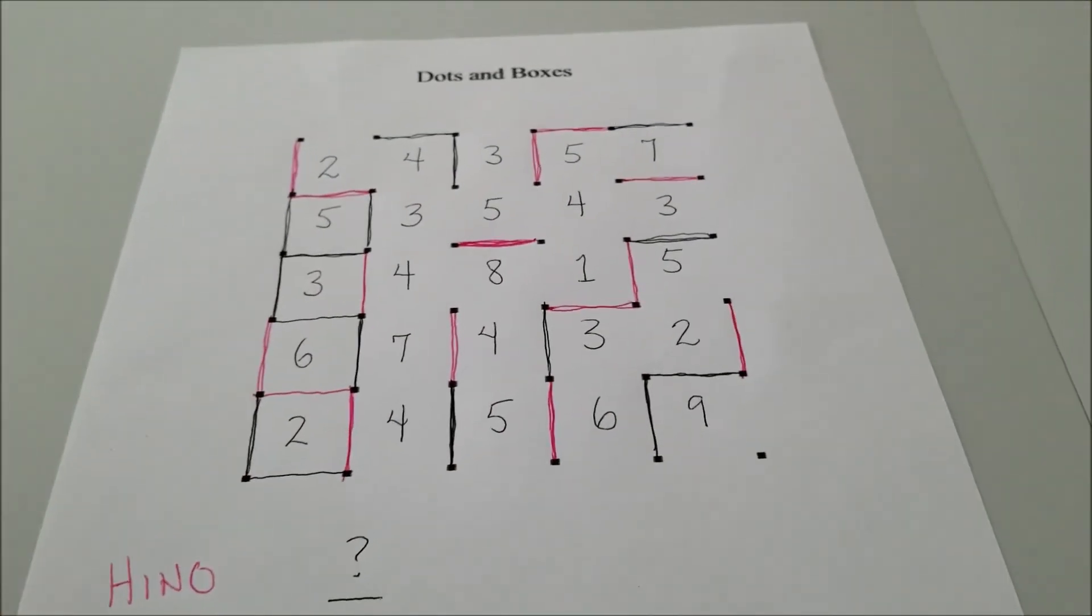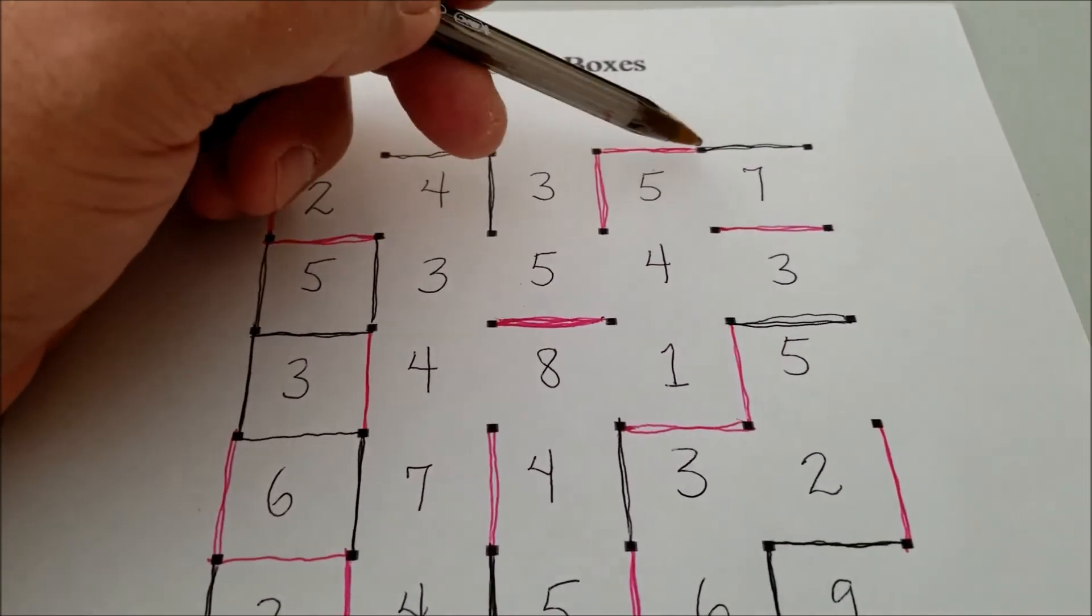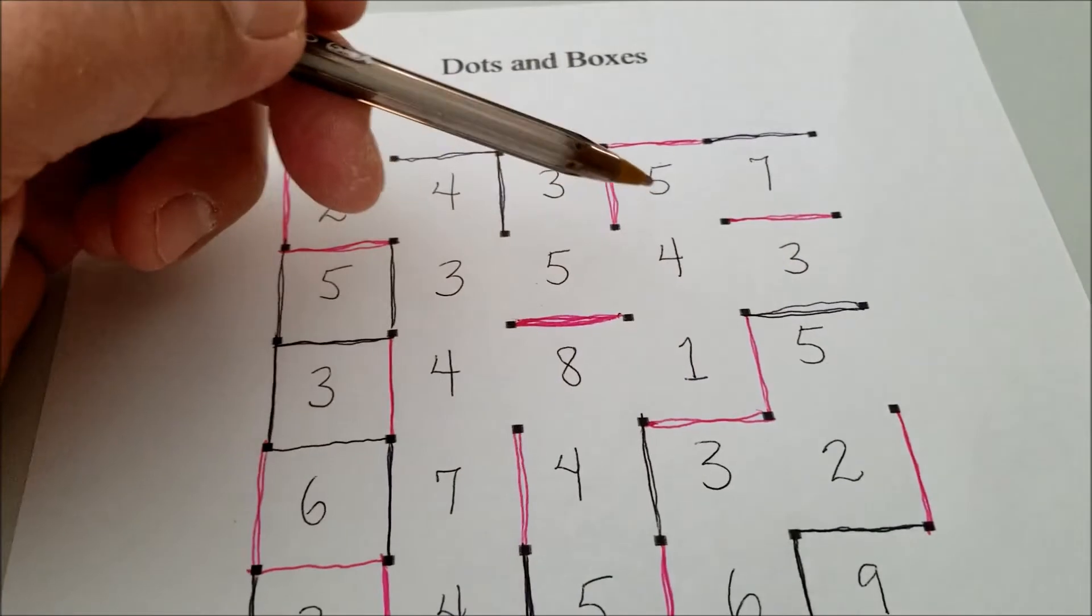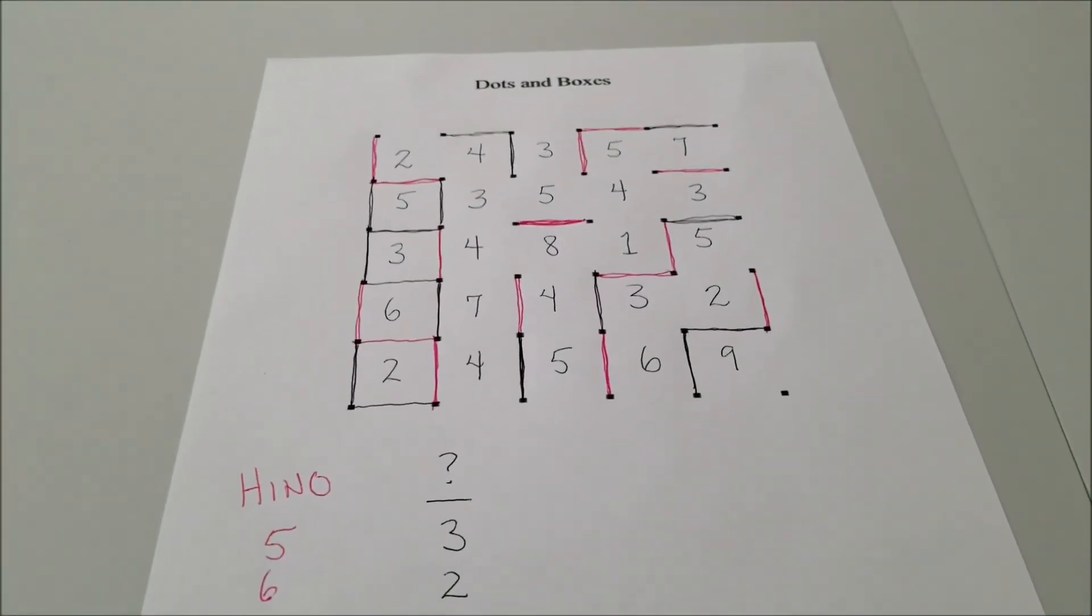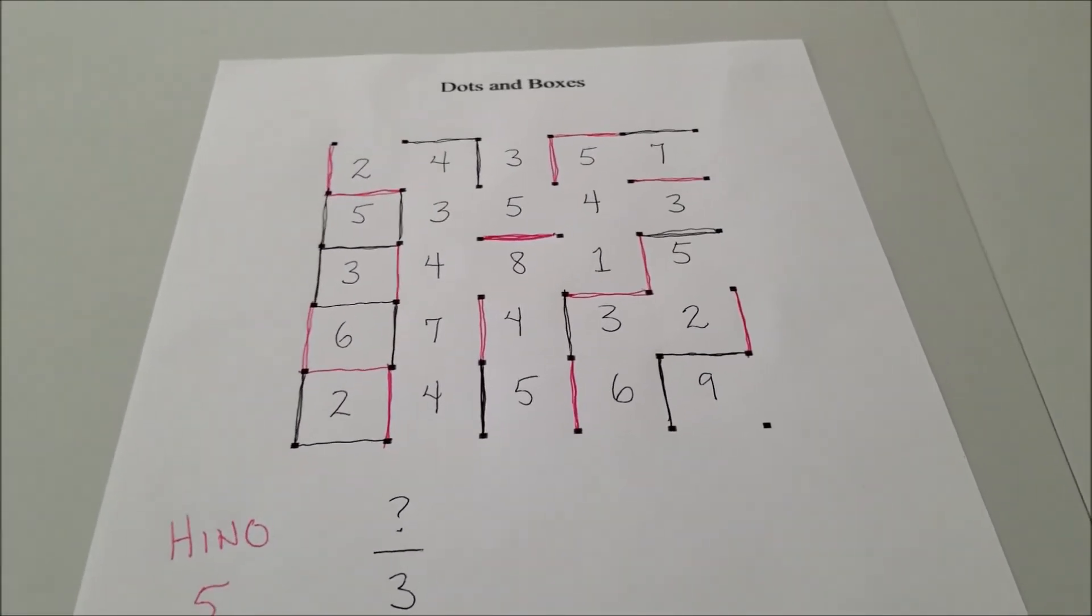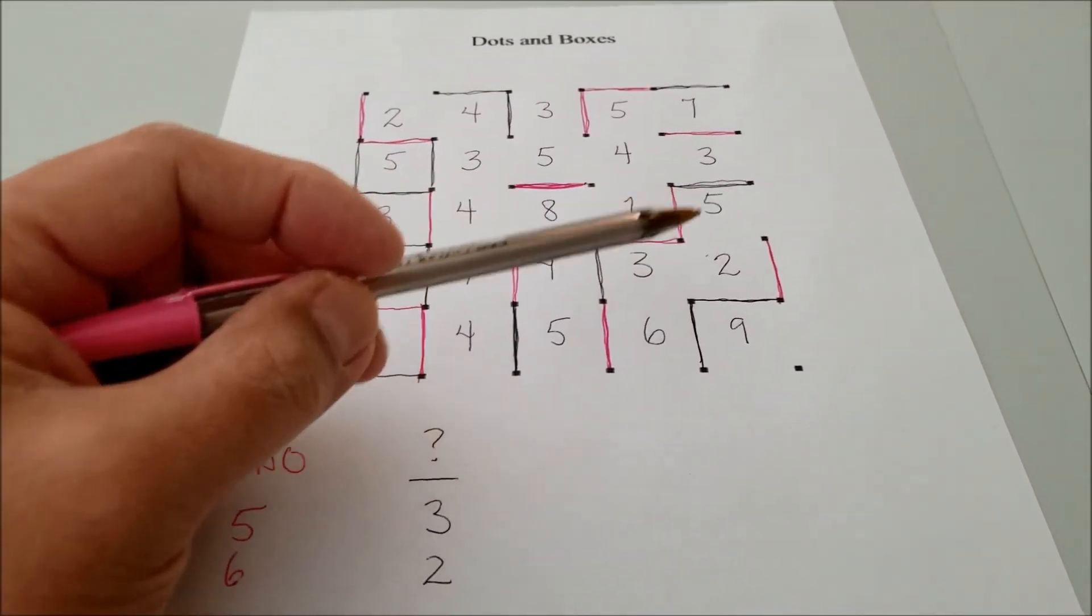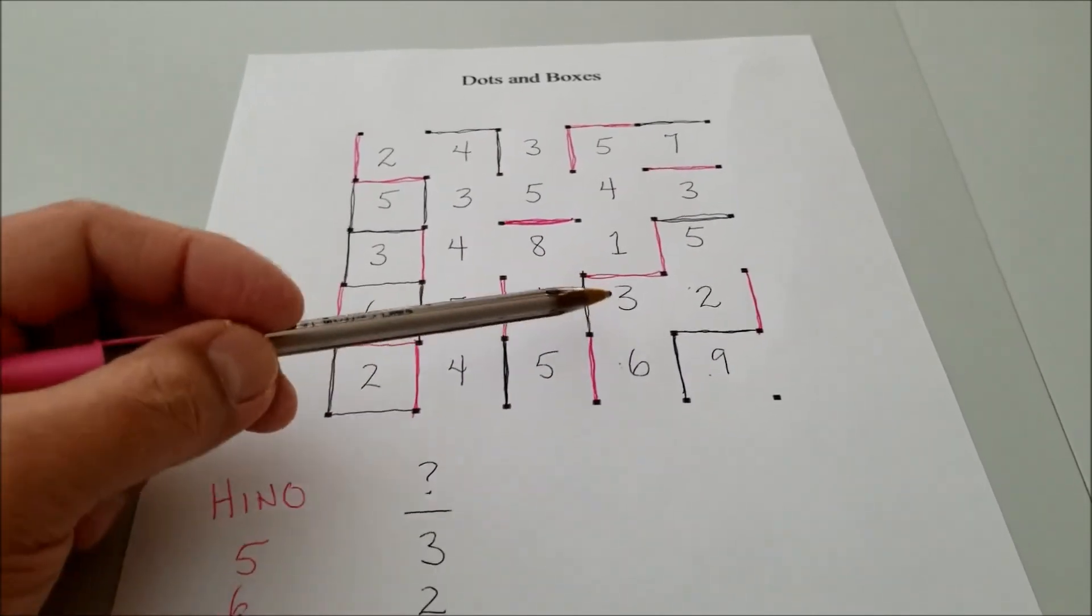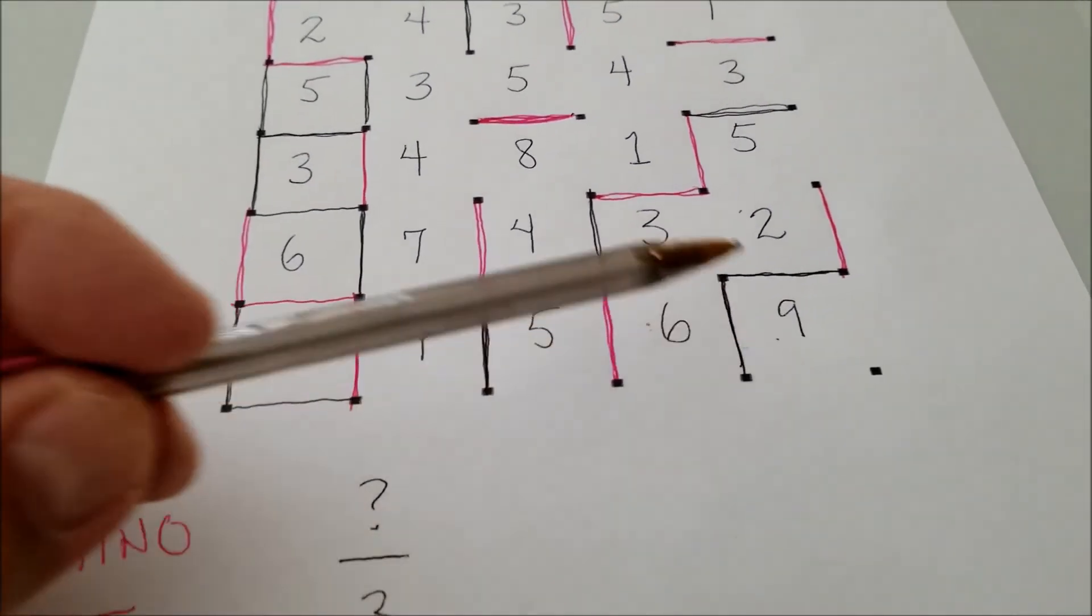So you have to kind of strategize and say, okay, if I take the seven, then I give my opponent the lower score of three. So it's an interesting game. If you're just trying to play somebody, it's almost like chess where you might give up a smaller number to get a bigger number. Same thing in chess where you might give up a pawn in order to get a bishop or even a queen, something big.